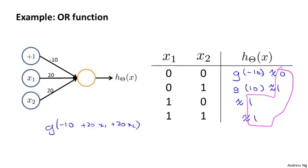So hopefully with this, you now understand how single neurons in a neural network can be used to compute logical functions like AND and OR and so on. In the next video, we'll continue building on these examples and work through a more complex example. We'll get to show you how a neural network now with multiple layers of units can be used to compute more complex functions like the XOR function or the XNOR function.